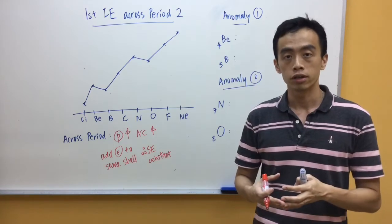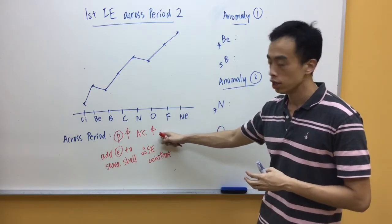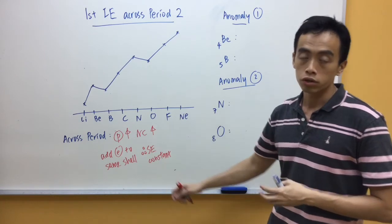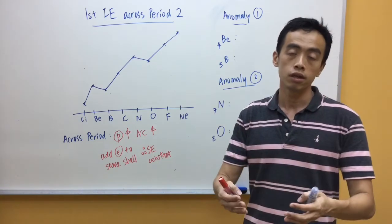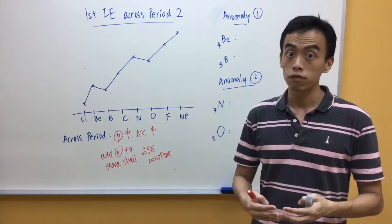So, the overall effect is when I increase in the nuclear charge, I have constant shielding effect. The overall attraction between the nucleus and the valence electrons will increase, or the effective nuclear charge increases.